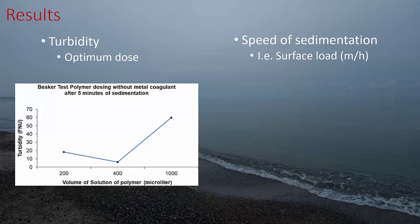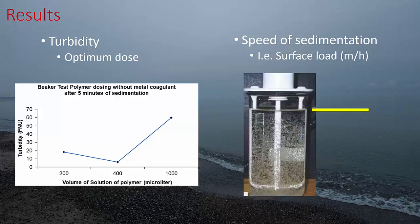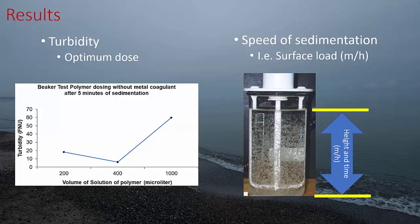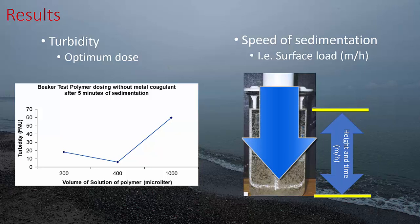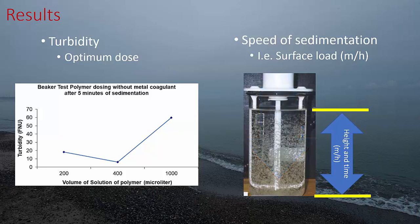Now looking at the speed of sedimentation — that is the surface load in meters per hour — you can also get this from the yard test. You measure the height of the beaker and when you start sedimentation you clock how long it takes for the flocs to fall to the bottom of the beaker. From that you get an indication of the surface load for this type of water with this type of suspended solids.